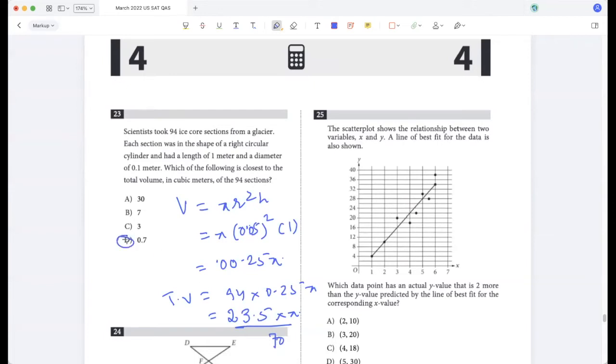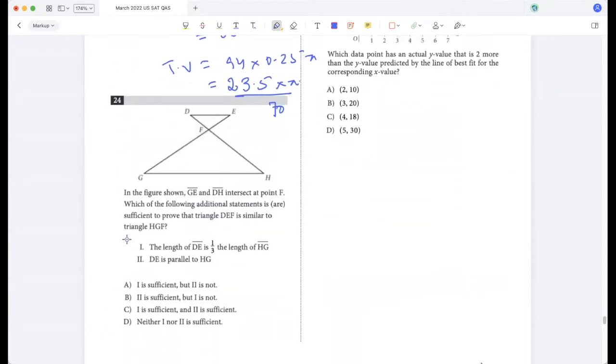In the figure shown GE and DH intersect at point F. Which of the following additional statements is sufficient to prove that the triangles are similar? The length of DE is one third the length of GH. DE is parallel to GH. The thing is, because of this structure these two angles are equal, they are vertically opposite angles. And if this and this turn out to be parallel, then obviously by a property the triangles are similar. So this is sufficient. Just the length being one third of the other triangle doesn't prove anything, so it's just option B.